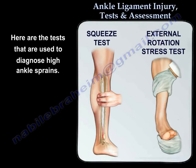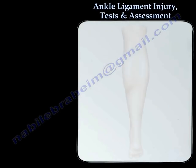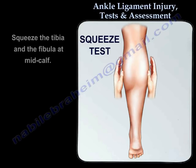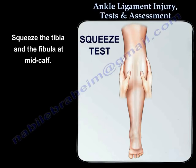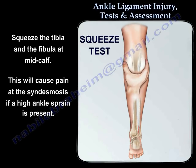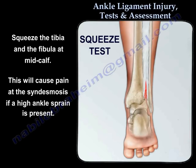The tests used to diagnose high ankle sprain are the squeeze test and the external rotation stress test. To perform the squeeze test, squeeze the tibia and the fibula at mid-calf. It will cause pain at the syndesmosis if a high ankle sprain is present.